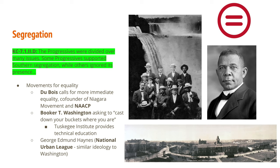Washington founded the Tuskegee Institute, which provided a technical education, in keeping with his philosophy that African Americans needed access to higher-paying jobs so that they could eventually enjoy equality in American society. At the same time, the National Urban League was created by George Edmund Haynes — still active today — with a similar ideology to Washington, looking for new economic opportunities that would create a pathway for equality.